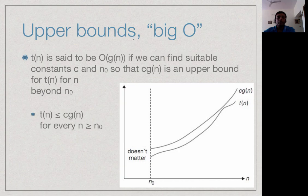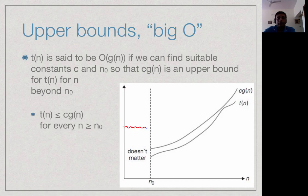The notation we need is that of an upper bound, given by the notation Big O. We say that a function g of n is an upper bound for another function t of n if beyond some point g of n dominates t of n. Since g of n is an order of magnitude function, we allow a constant factor, so it is c times g of n which dominates t of n. Beyond some limit n0, t of n always lies below c times g of n, and in this case we say that t of n is Big O of g of n.